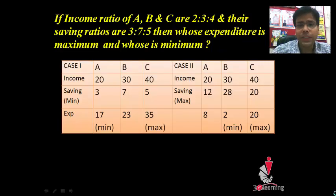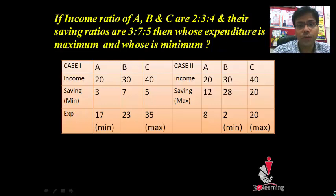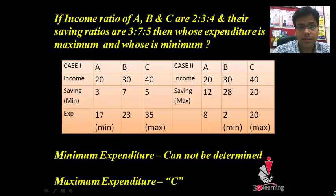Now we need to compare these two cases. The minimum expenditure in Case 1 is of A and in Case 2 is of B — so there is ambiguity, and we cannot say anything about the minimum expenditure. But for maximum expenditure, C is always maximum in both cases, so there is no ambiguity. We finally conclude: minimum expenditure cannot be determined, but maximum expenditure is of C.